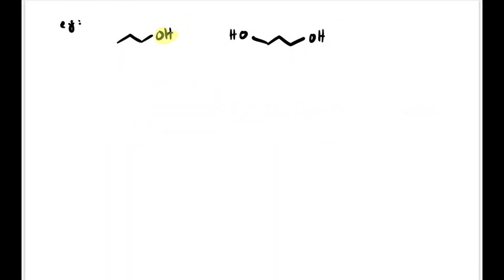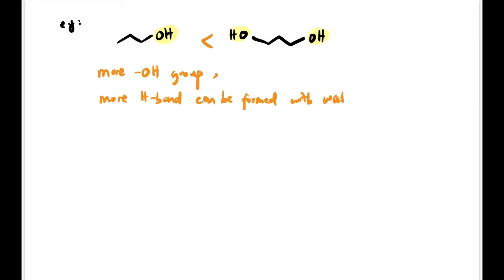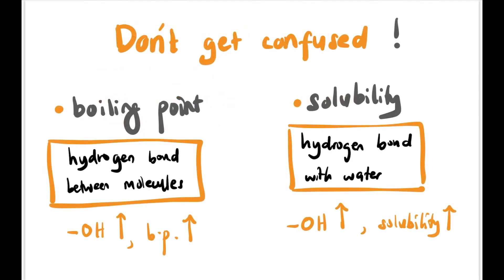Comparing a compound with one OH group versus a diol: the diol is more soluble because more OH groups means more hydrogen bonds can be formed with water. Note: for boiling point, hydrogen bonds form between molecules; for solubility, hydrogen bonds form with water — but in both cases, more OH groups means higher boiling point and greater solubility.